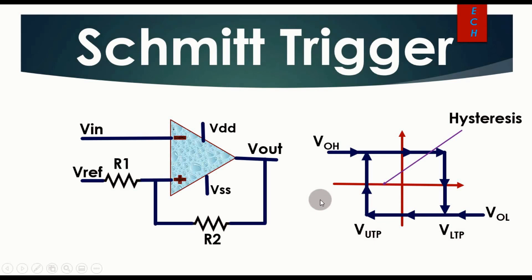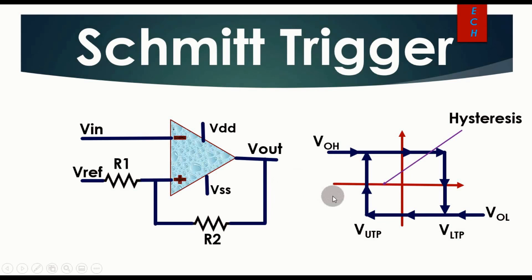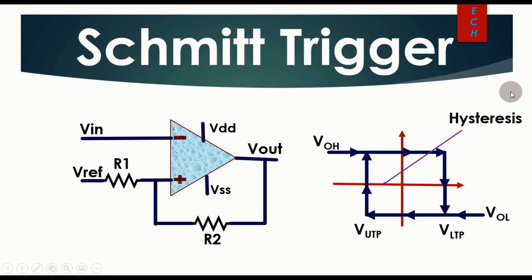We have already seen the working of the inverting type comparator and non-inverting type comparator in my previous video. In a negative type comparator, if your input signal is less than your reference signal, your output is high, and if your input signal is greater than the reference signal, your output is low. But between the upper and lower trip points there is a hysteresis, and your comparator output will hold a certain state — if it is high it holds high, if it is low it holds low.